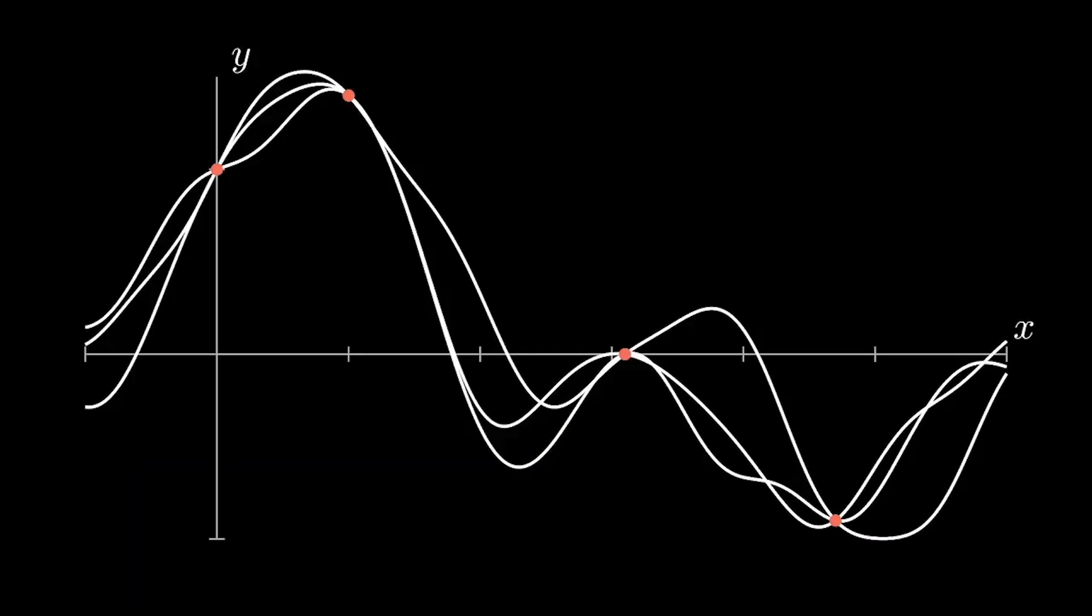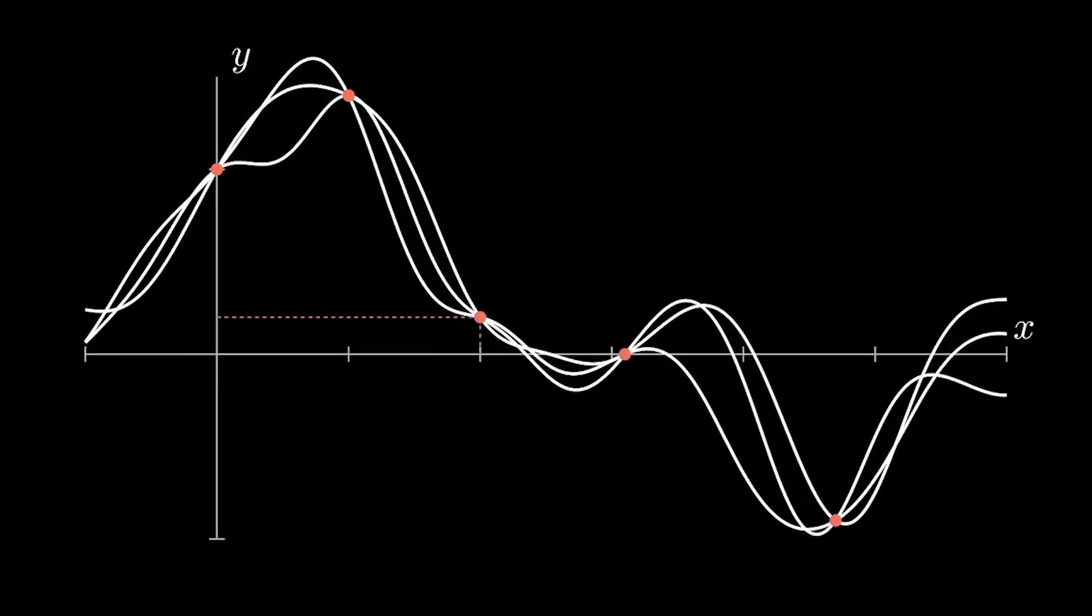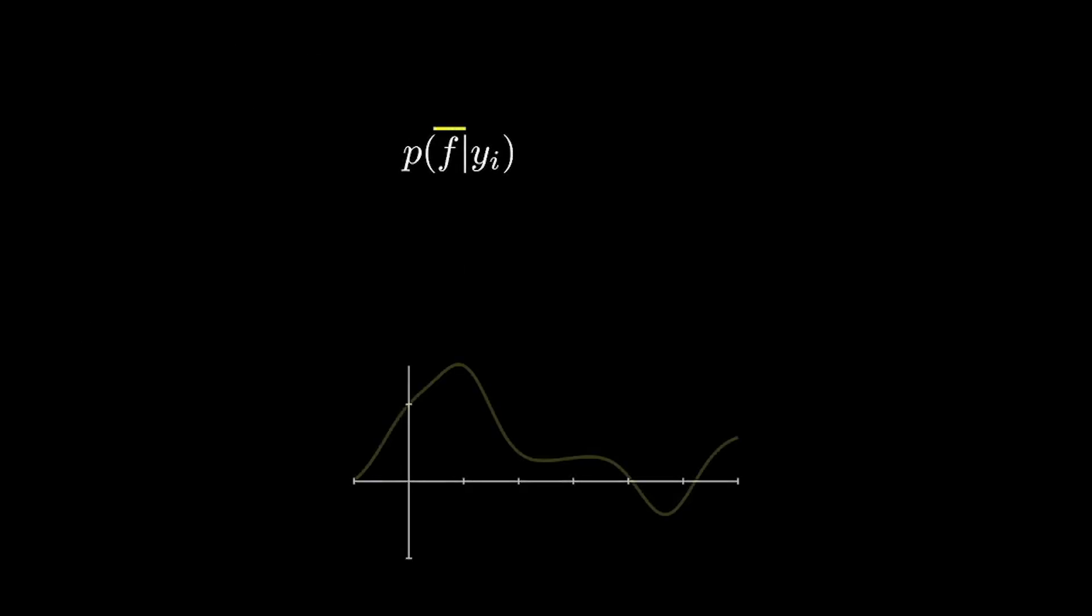Let us accept for now that Gaussian processes are doing precisely what we want. So, we are in a situation of having a probability distribution over functions. What happens when we are adding more information? So this means we are adding more points. What we want is to adapt our probability distribution accordingly. So, this means we need to calculate the probability of a function under the condition that we observe new points.